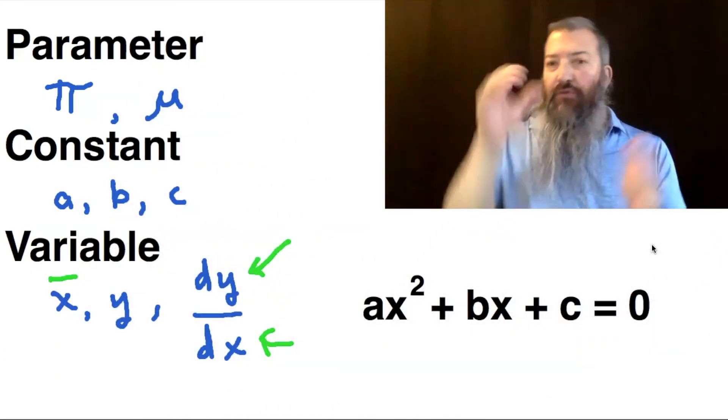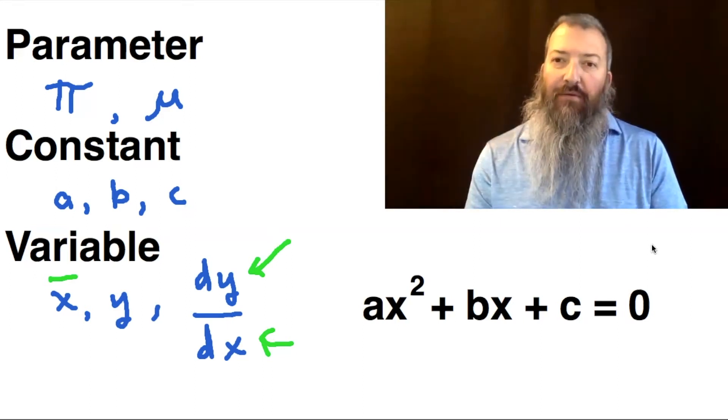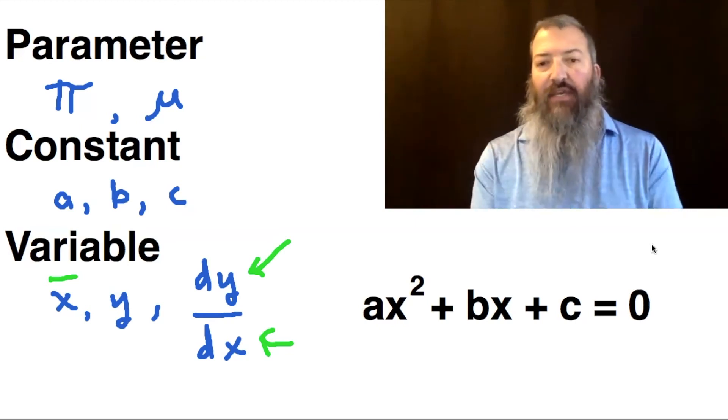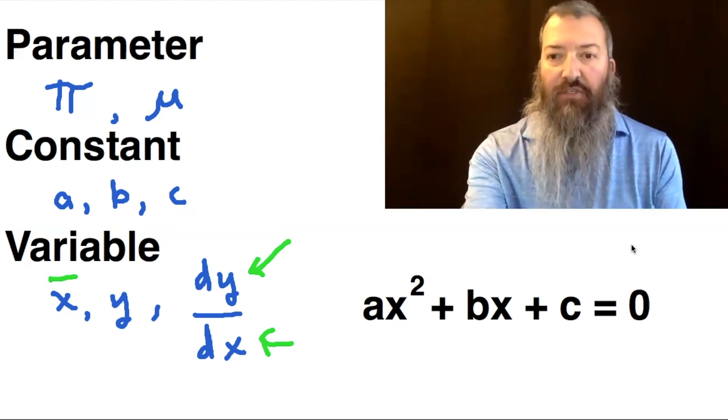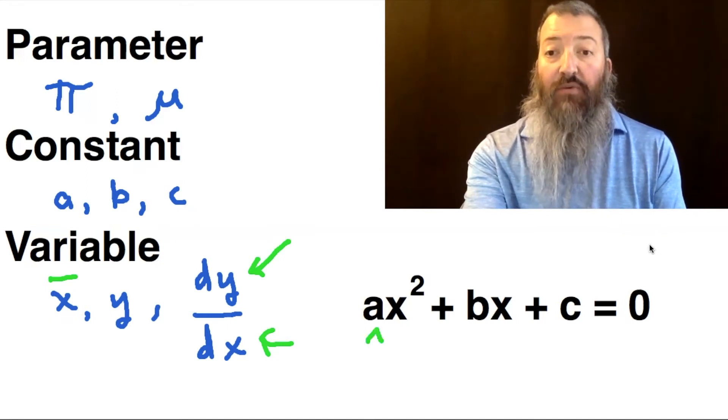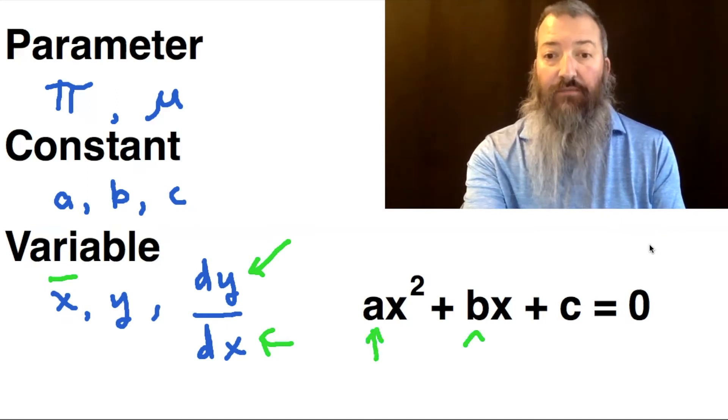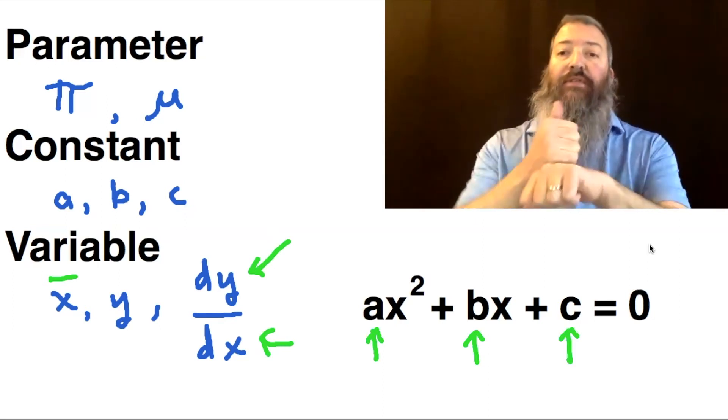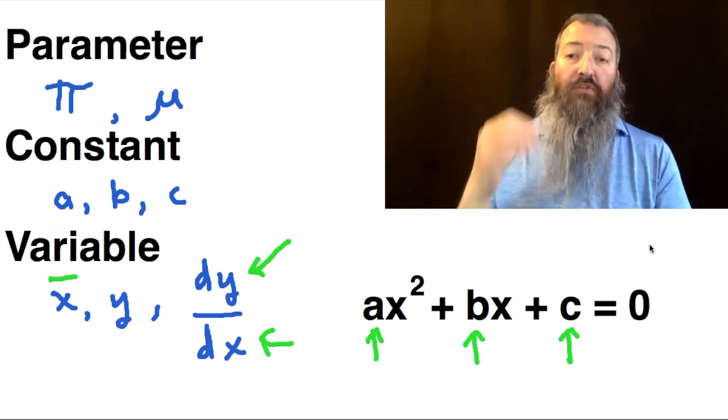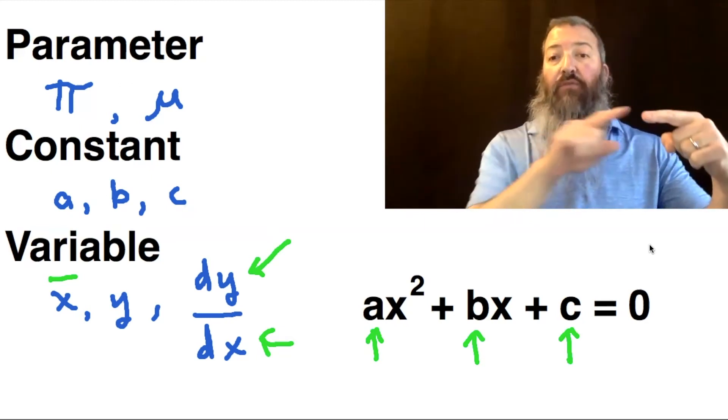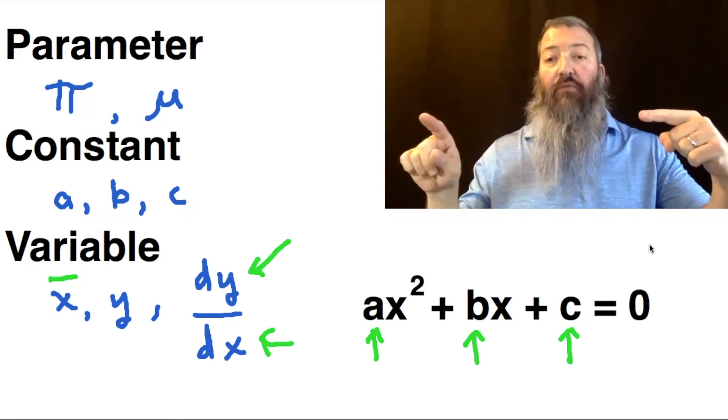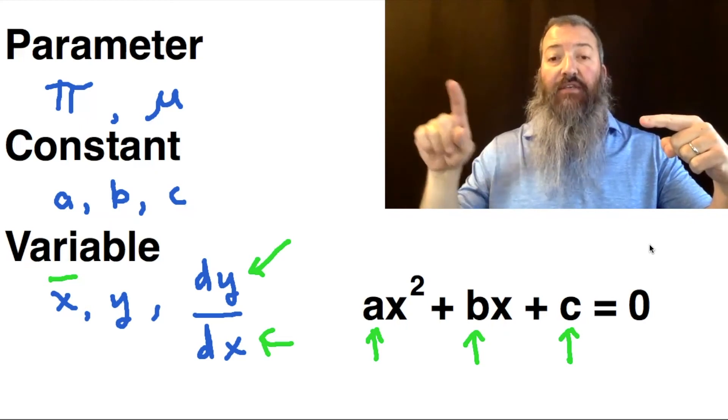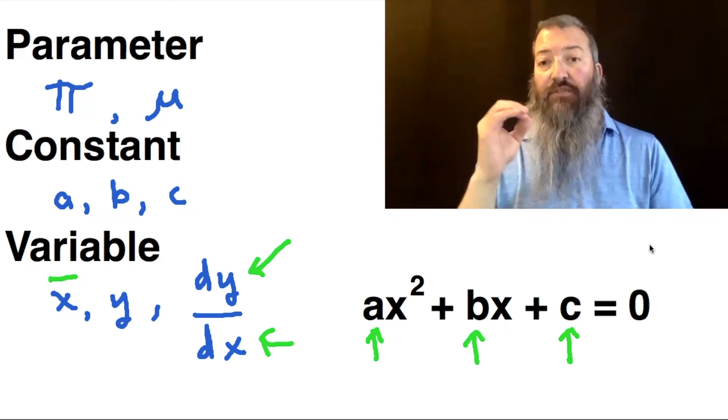A good way to think about how parameters and variables work together is by looking at the example of this quadratic equation below. A x squared plus b x plus c equals zero. So this is a quadratic equation set equal to zero. So what we're doing is we're finding the roots of the quadratic. We're finding where the function crosses the x axis or where the function equals zero.